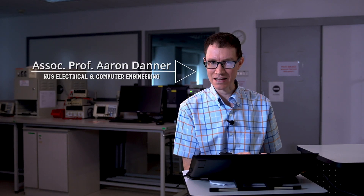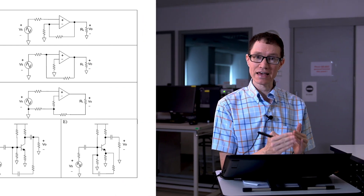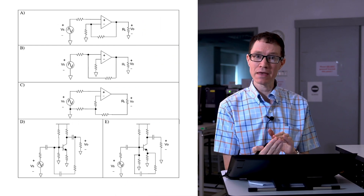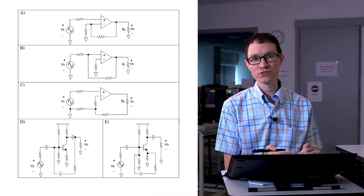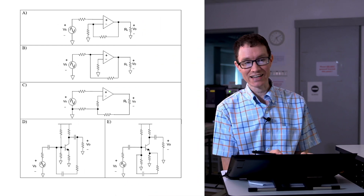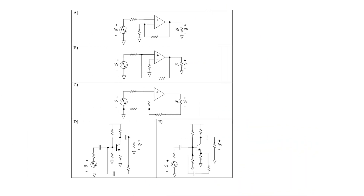Let's identify the feedback type in each of these circuits, and also identify the sign of A and beta without doing any calculations. In circuit A, I can walk all the way to the amplifier without crossing the feedback path. Therefore, this is series.